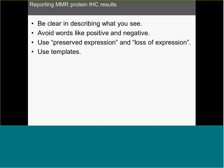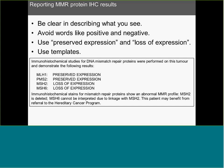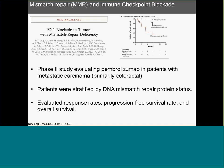When reporting MMR IHC results, be clear in describing what you see. Avoid ambiguous words like 'positive' and 'negative'; use 'preserved expression' and 'loss of expression.' Use templates — the CAP templates are available, or develop your own local templates. Involve your oncologists and surgeons so they understand what you mean. If there is loss of expression, guide them as to what that means, and make the recommendation that if it falls within the category of a likely germline mutation, the patient should be referred to a hereditary cancer program.